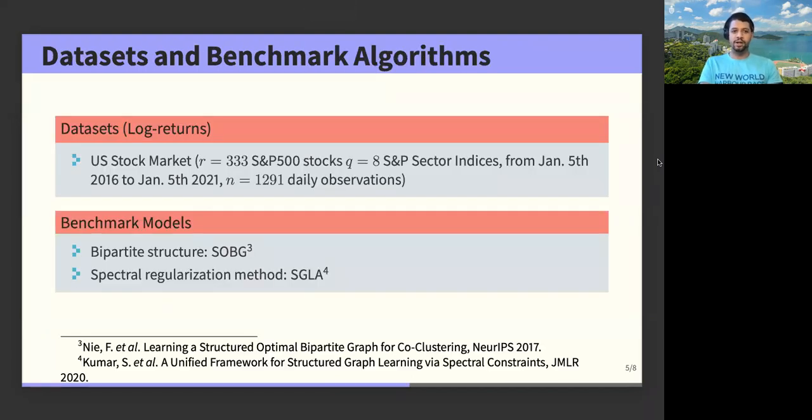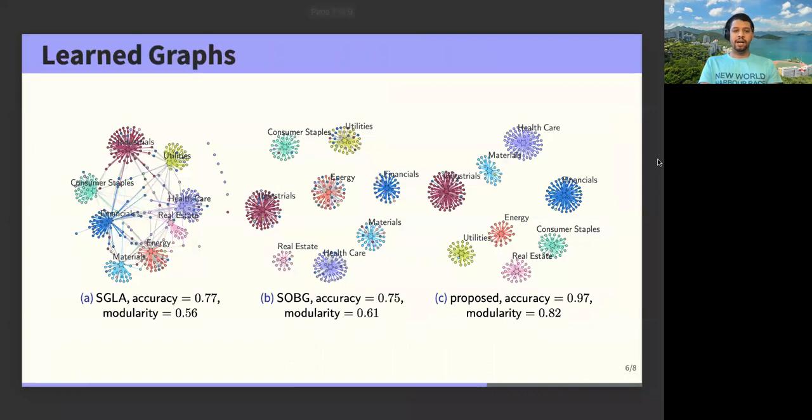Now just a sneak peek at the results. We consider stock market data, more precisely log returns from around 300 stocks listed in S&P 500, as well as eight sector indices from January 2016 to January 2021. And then we benchmark with the models that we discussed before. On the left-hand side here, we have the estimated graph by SDHGA. As we can see, there are seven isolated nodes, which is not what we would expect in practice.